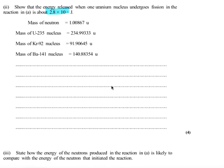So we can create a balanced mass equation. We have the mass of uranium, 234.99333, plus the mass of the neutron, 1.00867. And on the other side, we have the mass of the krypton, 91.90645.